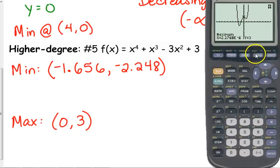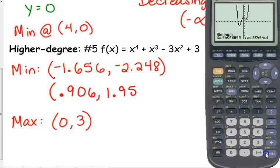And then we have another minimum at 0.906, 1.955. That's the easy part. Talking about the increasing and decreasing intervals is a little bit more difficult.